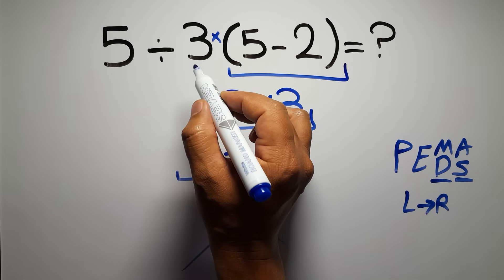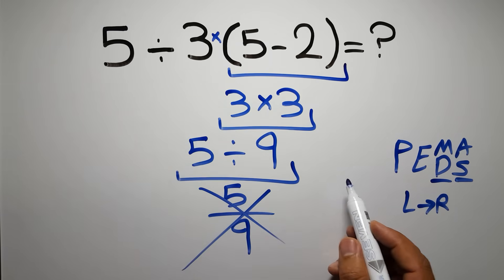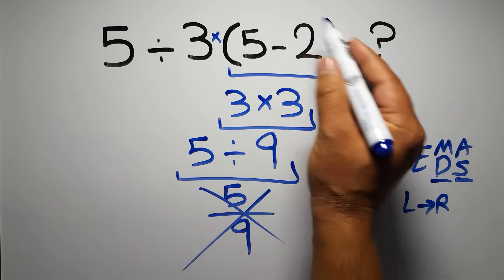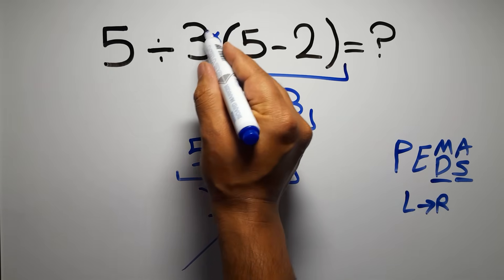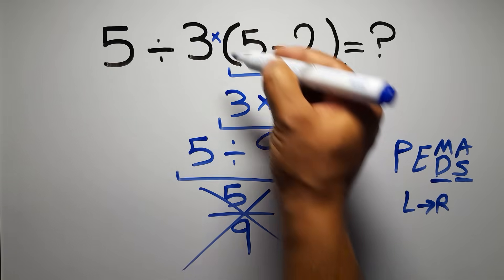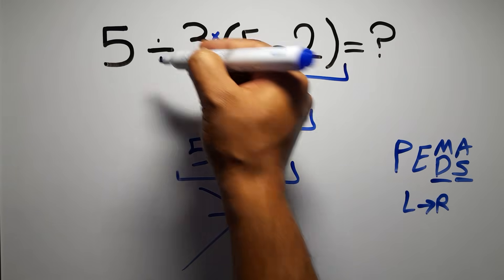So according to PEMDAS, first we have to do this parentheses, then this division, and finally this multiplication. If we do this multiplication before this division, it is wrong.